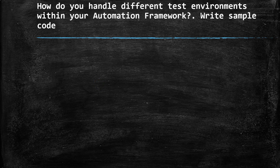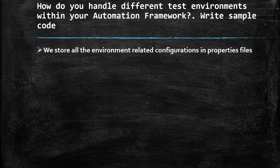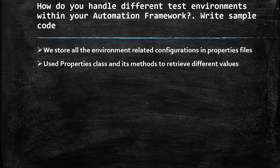The next question is: how do you handle different test environments within your automation framework, and can you write sample code? This is a very frequent question. If there are multiple environments on which you want to execute automation scripts, do you change values manually each time, or do you use a mechanism to easily switch? The answer is: store all environment-related configurations in a properties file, then use the Java Properties class and its get() method to retrieve values. Changes are only needed in the properties file with no changes to the remaining code.